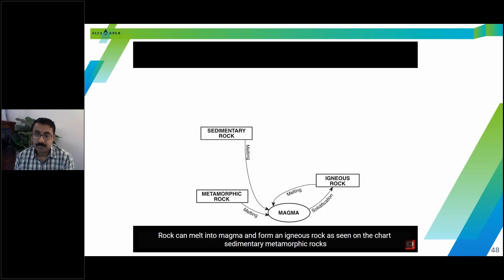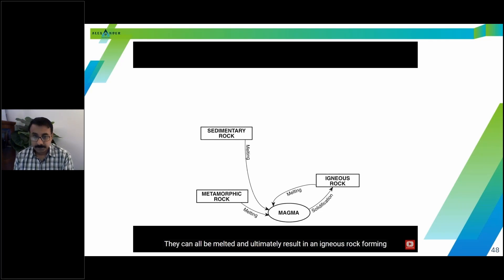But any rock can melt into magma and form an igneous rock. As seen on the chart, sedimentary, metamorphic rocks, they can all be melted and ultimately result in an igneous rock forming.